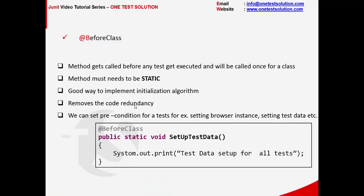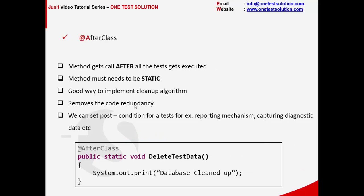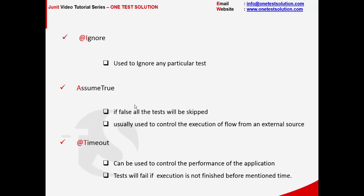So, to summarize: @BeforeClass annotation method gets called before any test gets executed, is called once for a class, the method must be static, and it's a good way to implement an initialization algorithm at the class level. @AfterClass method gets called after all tests have executed, must also be static, and is a good way to implement a cleanup algorithm to remove code redundancy. @Ignore is used to skip a particular test. assumeTrue, when false, skips all tests and is usually used to control execution flow from an external source. @Timeout is used to control the performance of the application — the test will fail if execution is not finished before the mentioned time.